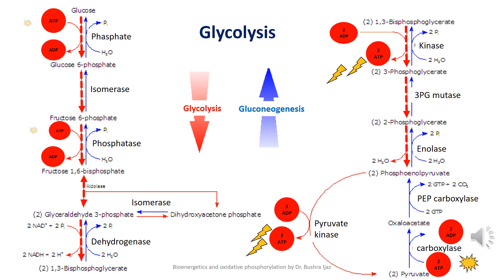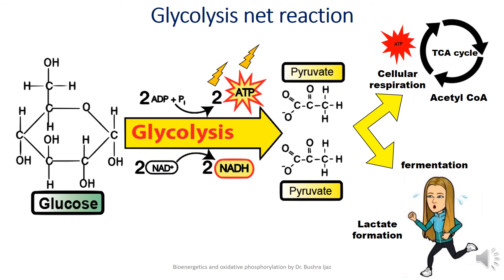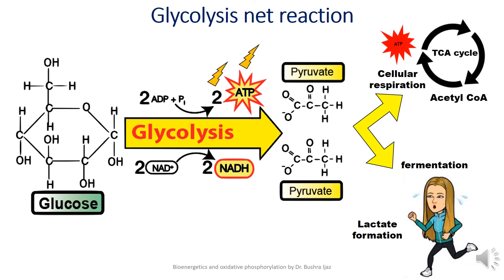1,3-bisphosphoglycerate then donates one of its phosphates to generate an ATP molecule and turns into 3-phosphoglycerate. This isomerizes to 2-phosphoglycerate, which then loses a water molecule to become phosphoenolpyruvate. Phosphoenolpyruvate is quite unstable and immediately loses its phosphate group in the final step of glycolysis, forming another ATP molecule and turning into the final product pyruvate. The net result of glycolysis is 2 ATP molecules, 2 NADH, and 2 pyruvate molecules. If oxygen is available, pyruvate can be oxidized all the way to carbon dioxide in cellular respiration, making a lot more ATP.